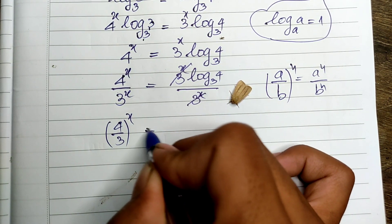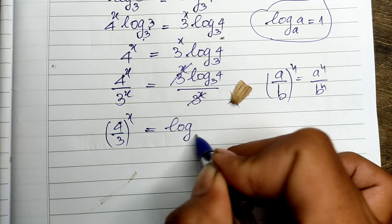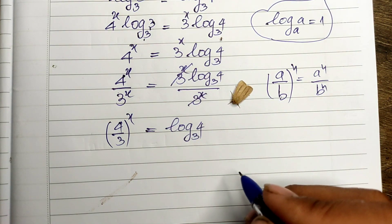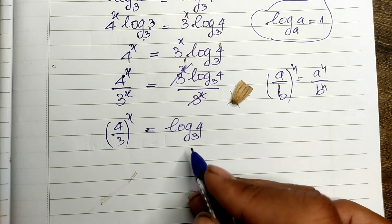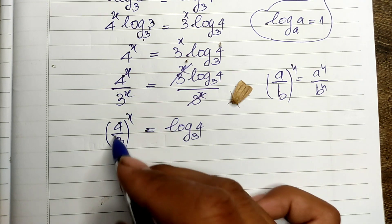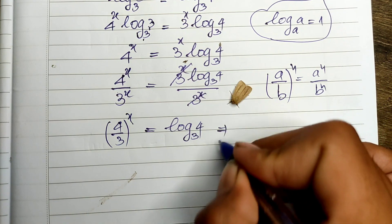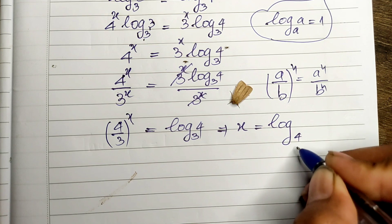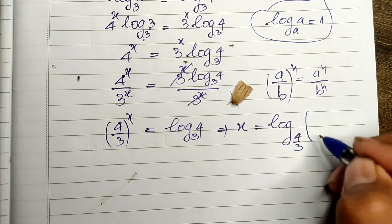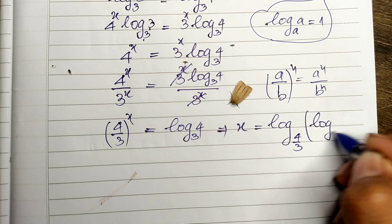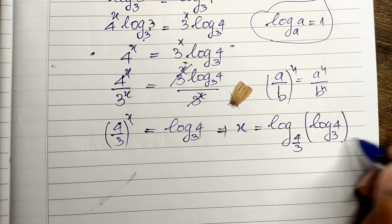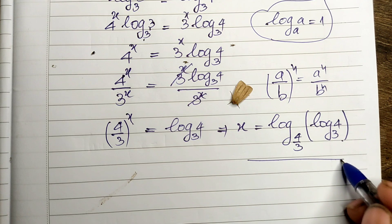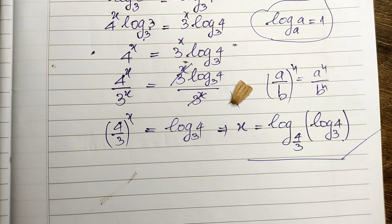So now we can find the value of h: h equals log base 3 of 4. This is our solution. Thank you for watching. If you like my videos, please don't forget to subscribe to my channel for more exciting videos. Goodbye.